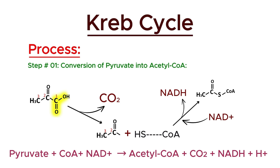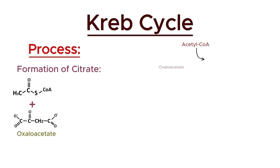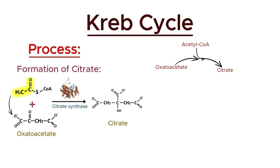Now that acetyl-CoA is ready, it enters the Krebs cycle. In the first step of the Krebs cycle, acetyl-CoA combines with a four-carbon molecule called oxaloacetate to form a six-carbon molecule called citrate. This reaction is catalyzed by the enzyme citrate synthase. During this step, the acetyl group from acetyl-CoA is transferred to oxaloacetate, completing the formation of citrate, which marks the beginning of the series of reactions that will lead to the production of energy and electron carriers in the Krebs cycle.